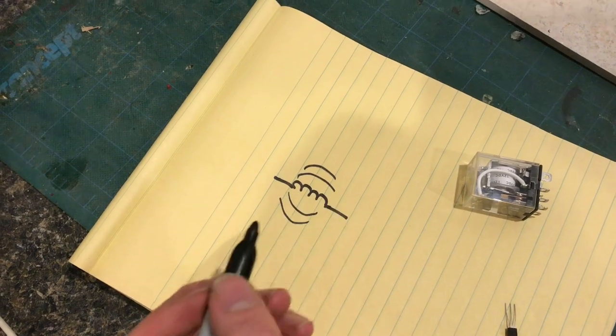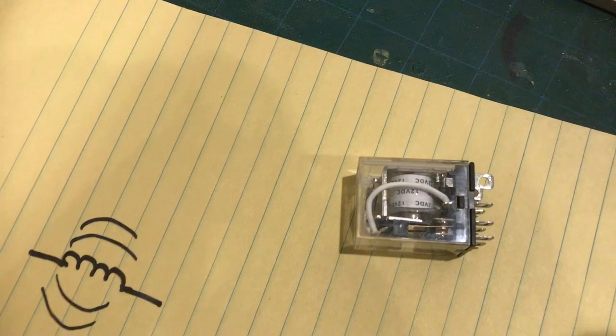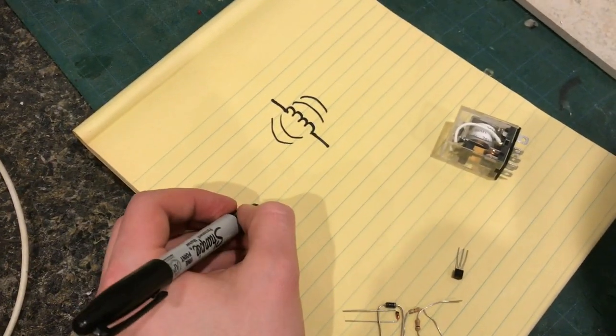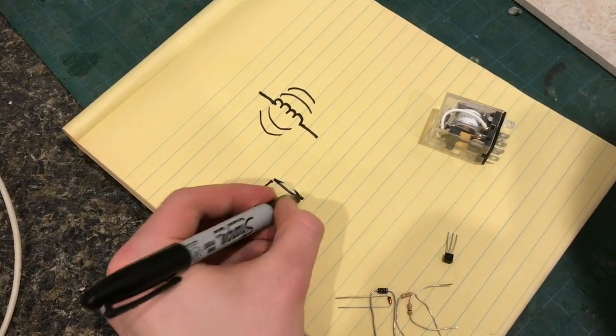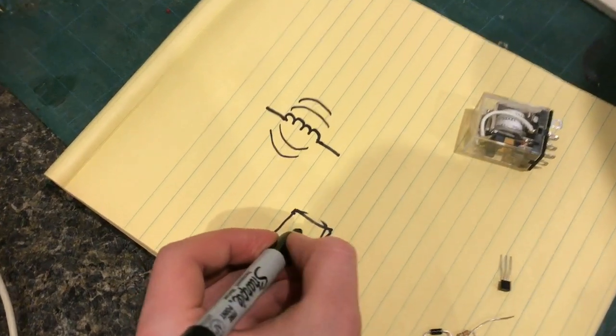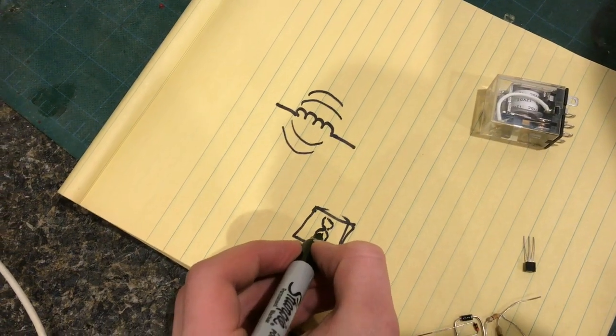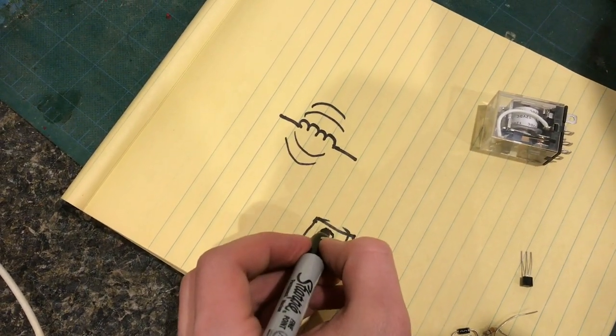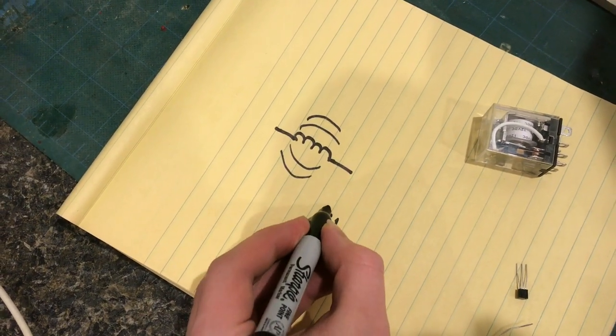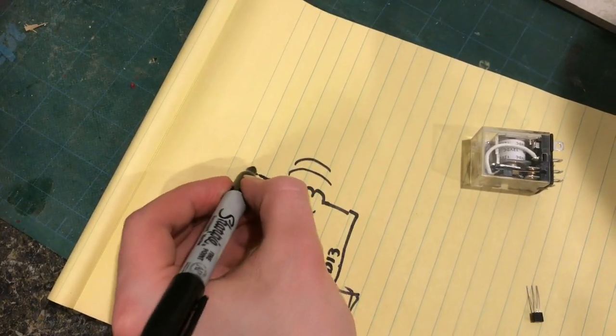So also we know that driving an electromagnet takes some decent amount of current. So if you have your Arduino over here, I'm gonna draw an Arduino as a box to simplify. Okay that's our Arduino and you have like digital pin 13 connected to this thing and you put a power supply on here.